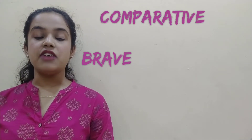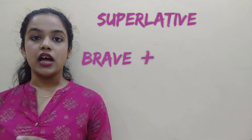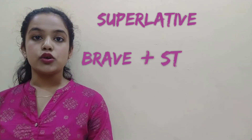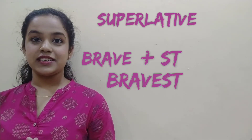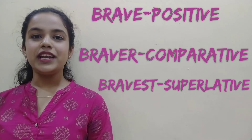Rule number two: if your adjective ends with the letter E and you have to convert it into comparative degree, you just add the letter R to the ending. For example, 'brave' — add R to its ending and it becomes 'braver'. To convert it into superlative degree, add ST to the ending, so it becomes 'bravest'. The three degrees are: 'brave' — positive, 'braver' — comparative, 'bravest' — superlative.